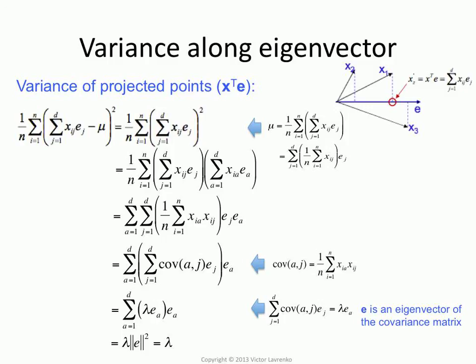So that explains why we pick eigenvectors with the biggest eigenvalues. Because they are the ones that are going to capture the most variance. Once you project to them, they capture the most variance. So it all becomes kind of obvious.